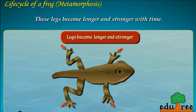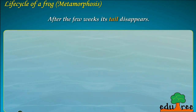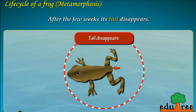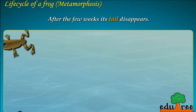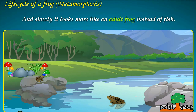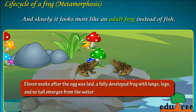These legs become longer and stronger with time. After a few weeks, its tail disappears, and slowly it looks more like an adult frog instead of a fish. 11 weeks after the egg was laid, a fully developed frog with lungs, legs, and no tail emerges from the water.